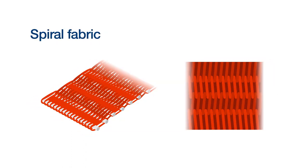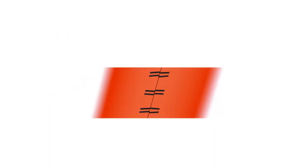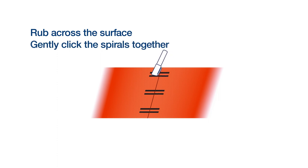You have a spiral fabric? After you've aligned the fabrics, use a marker pen to rub across the surface and gently click the spirals together, ensuring the check marks are aligned.